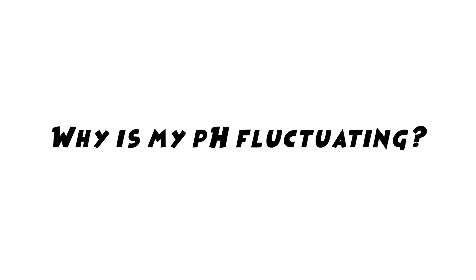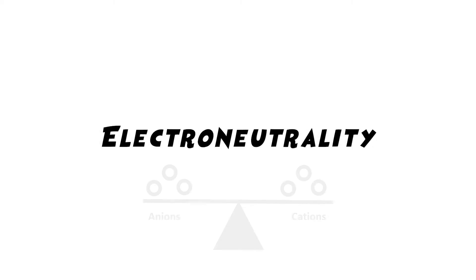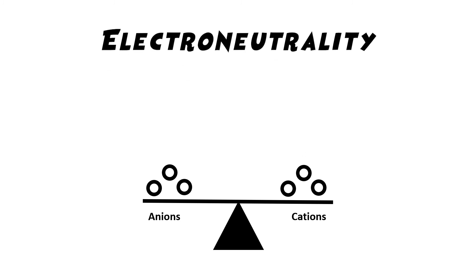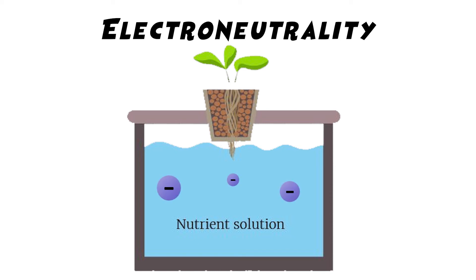So why does pH change in a nutrient solution, or why does it drift in one direction or another? This all comes back to the principle of electroneutrality — where chemical reactions take place on an equivalent basis. The law of electroneutrality states that in any single ionic solution, for example our hydroponic nutrient solution, the sum of negative electrical charges attracts an equal sum of positive electrical charges. Therefore, the total charge of an aqueous solution must be zero, meaning the number of positive charges from cations must equal the negative charges from anions.